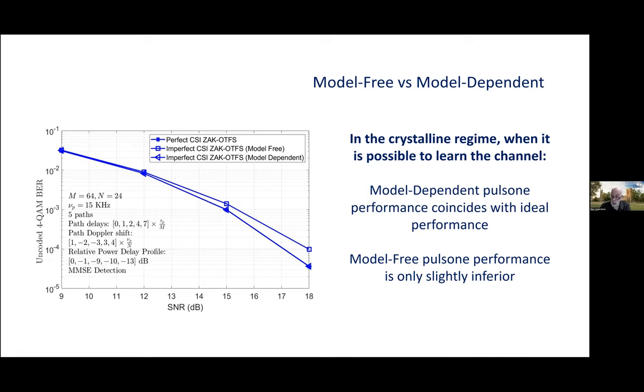So, here, first of all, we're going to look at what's lost when it's possible to learn the channel, but we choose to operate model-free. So, here we made a toy channel, a five-path resolvable channel, where the delay and Doppler shifts are integer multiples of the delay domain resolution 1 over B, and the Doppler domain resolution 1 over T.